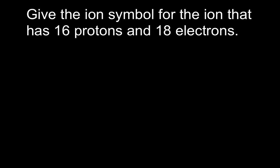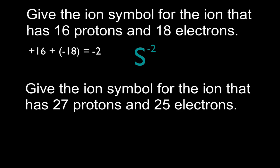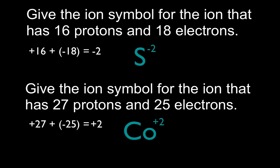Last set: we want the ion symbol for the ion that has 16 protons and 18 electrons. The number of protons tells us the element — that's the atomic number. Number 16 is sulfur, so we write S. Adding plus 16 and minus 18 gives minus 2. Sulfur has a minus 2 charge, which matches what we wrote down for the group 16 elements. The last one: the ion that has 27 protons and 25 electrons. Element number 27 is cobalt, so we write Co. Adding plus 27 and minus 25 gives plus 2, so cobalt is plus 2. We can't fully confirm that from our periodic table because cobalt is a transition metal and can form either plus 2 or plus 3, but in this case it's plus 2.